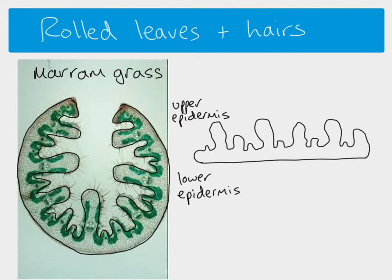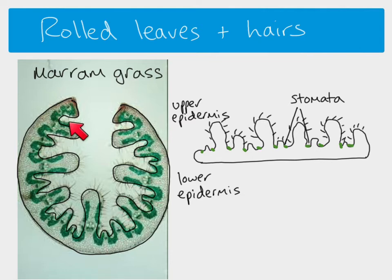With this rolled leaf, another interesting thing is that the stomata are all on the upper epidermis. Normally with leaves we think about the stomata being on the lower epidermis, but in xerophytes — especially ones with rolled leaves — we see them on the upper epidermis. We also have all of these little hairs. All of these things together — the rolled leaves, the hairs, and the stomata being on the upper epidermis — help to reduce water loss.